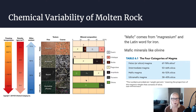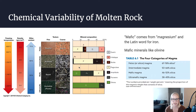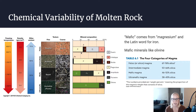Rocks that are ultramafic or mafic are going to have a high olivine and pyroxene content — mostly olivine and pyroxene. Mafic rocks are also going to have plagioclase in them. As you move to more felsic rocks, you're going to see less olivine and pyroxene and more plagioclase, biotite, and potassium feldspar. In felsic rocks, you'll see a lot of quartz. We'll get into the details of why this happens later, but I want you to understand that there are these four main compositional categories.